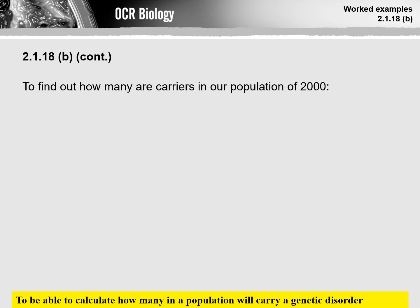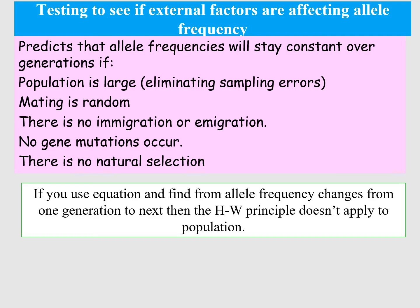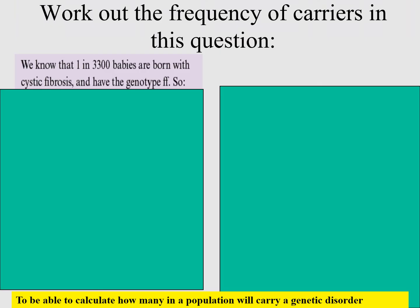Once you've done that, you can use this to work out whether a population follows Hardy-Weinberg. If you look at allele frequencies across different generations and they change, then the population is no longer following the Hardy-Weinberg principle, meaning one of those factors — like mutation or migration — must be occurring. For example, if five years later one in every 3,300 babies are born with cystic fibrosis, that change tells us Hardy-Weinberg's principle isn't being followed. Let's work through that calculation.